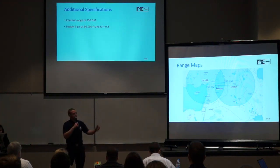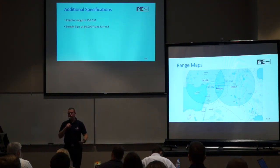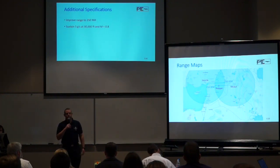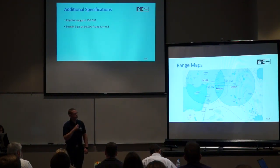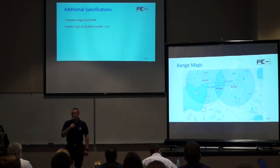Looking at our range maps, we determined that we would like to extend our RFP and put further restrictions on ourselves. We wanted to increase our combat radius to 250 nautical miles. If operating from Incirlik, Turkey or Mosul, Iraq, with 250 nautical miles we could reach the ISIS stronghold of Raqqa. We also decided we wanted to sustain the 5G turn at our cruising altitude.